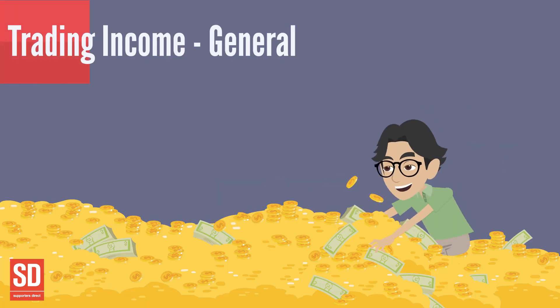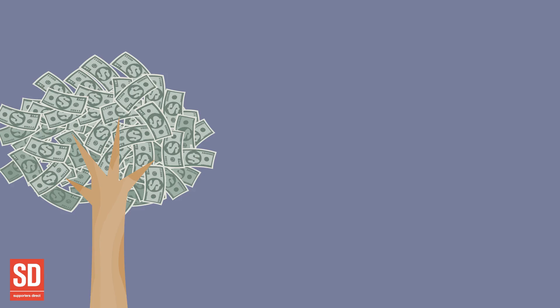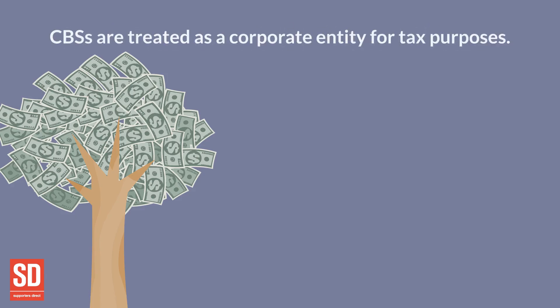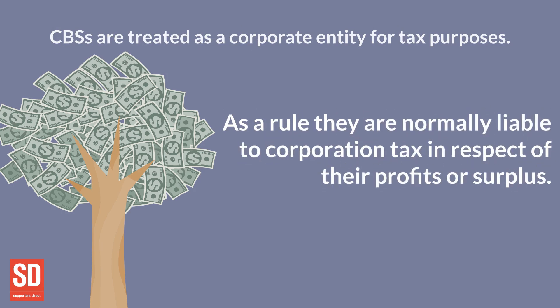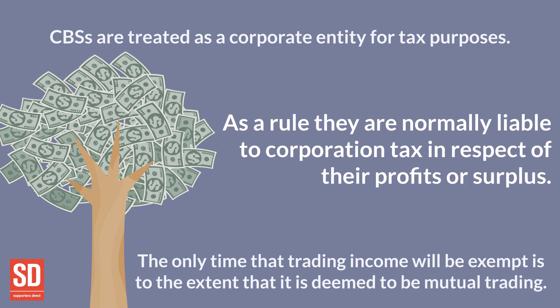General Trading Income. Community benefit societies are treated as a corporate entity for tax purposes and as a general rule they are normally liable to corporation tax in respect of their profits or surplus, computed in accordance with normal rules applicable for companies. The only time that trading income will be exempt from corporation tax is to the extent that it is deemed to be mutual trading.